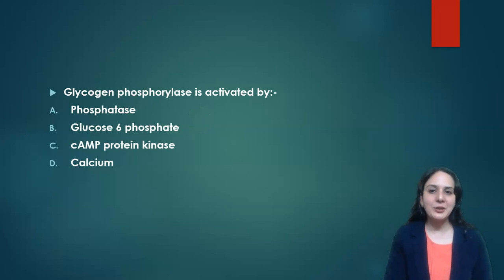Next is: glycogen phosphorylase is activated by? We know glycogen phosphorylase is an enzyme of glycogenolysis, that is breakdown of glycogen. Now glycogen phosphorylase is active in phosphorylated state. So what will phosphatase do? Phosphatase will remove the phosphate, so it will inactivate, whereas it is activated in the phosphorylated state. So phosphatase is not the answer.